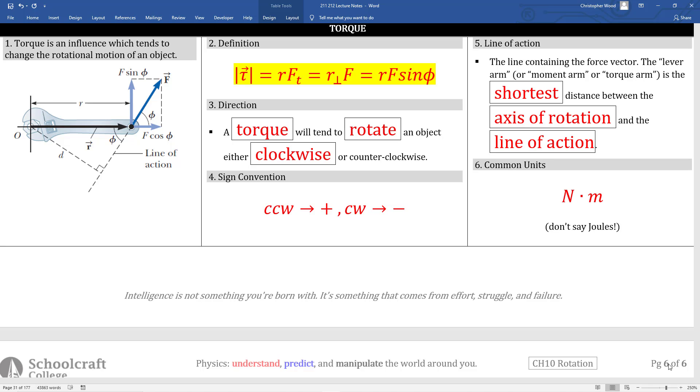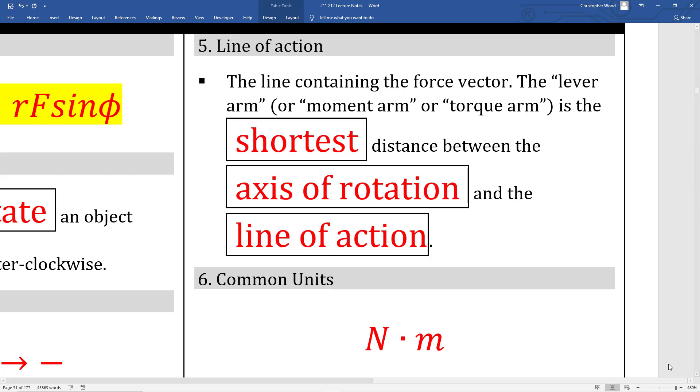Torque is again the product of perpendiculars where one of the pair is the force and the other pair is the torque arm. A torque will tend to rotate an object either clockwise or counterclockwise. So we need box 4 again. We consider counterclockwise as positive and clockwise as negative.